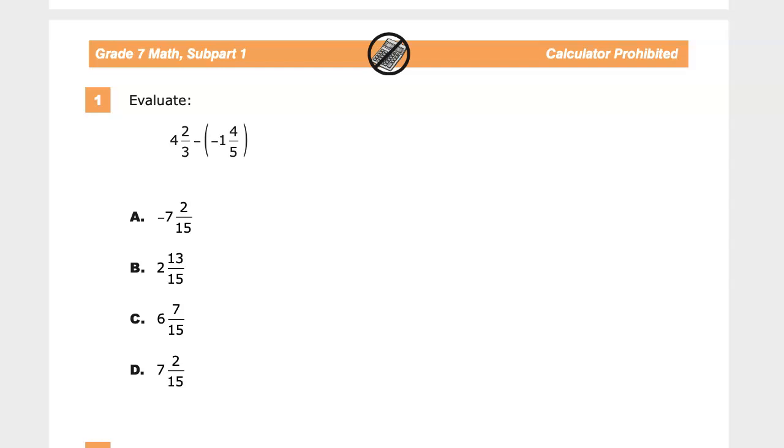So the question says four and two-thirds minus negative one and four-fifths. So there are a few different things to think about here. The first thing that I'm going to look at is, is it a calculator allowed section? It is not. Calculator prohibited. Kind of a bummer.